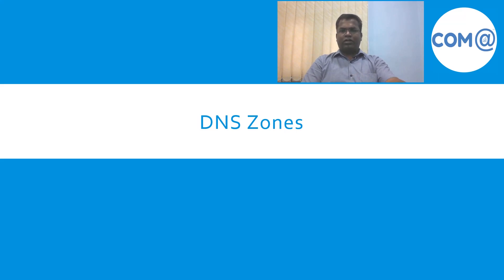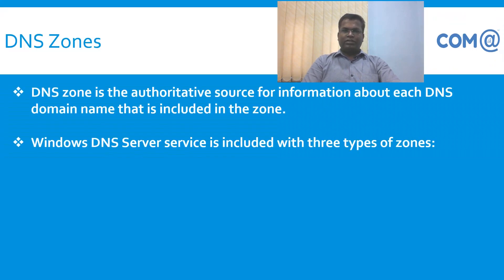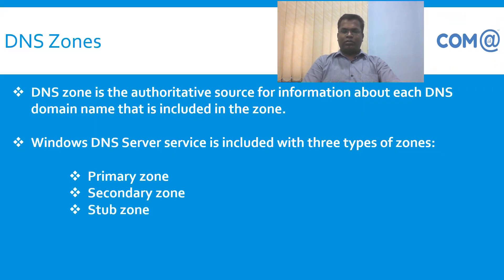In this video we will be discussing about DNS zones. A DNS zone is the authoritative source — that is, the authoritative source database that maintains DNS records. We know of three types of zones: primary zone, secondary zone, and stub zone.